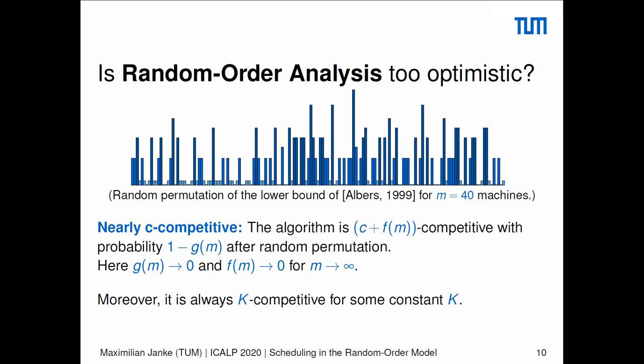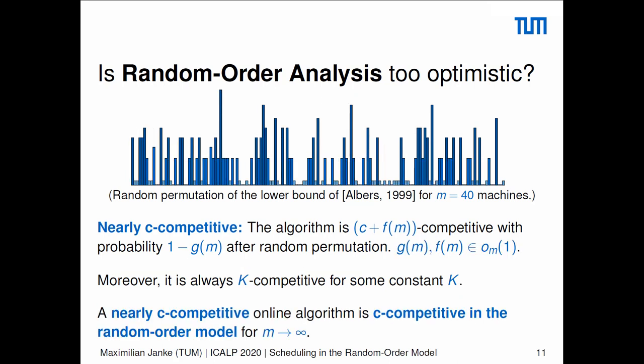Finally, in our new model we want to have a performance guarantee even on these worst-case sequences. Formally, we call an algorithm nearly c-competitive if it's c plus f(m)-competitive on all but 1 minus g(m) of the permutations of the input sequence, where g and f are functions which vanish as the number of machines goes to infinity, and moreover we want to be k-competitive for some constant k. For example, k in our case is just 2 — so even on worst-case sequences, our new algorithm will be no worse than Graham's greedy strategy. We think this measure of nearly competitiveness is a really good measure for random order makespan minimization, and an algorithm which is nearly c-competitive is in particular c-competitive in the random order model.